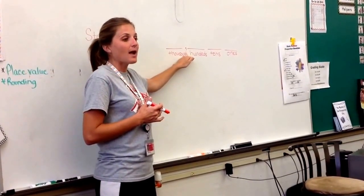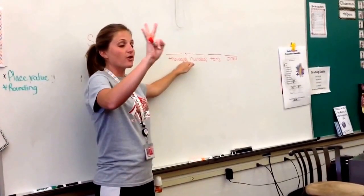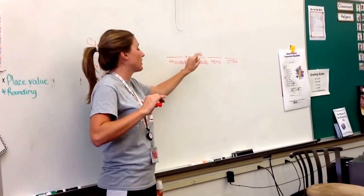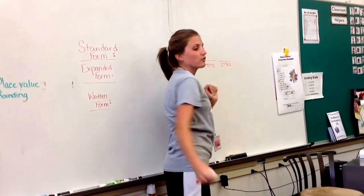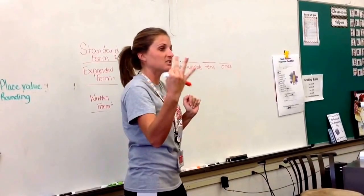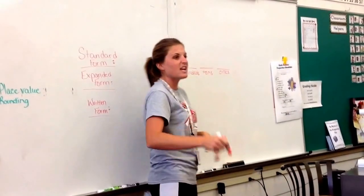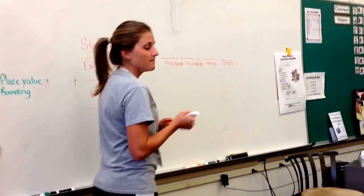When I write numbers, every third place value I have to put a comma. This is called a series. After the three place values, I start a new series, and it needs a comma.